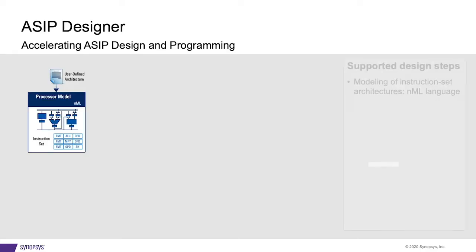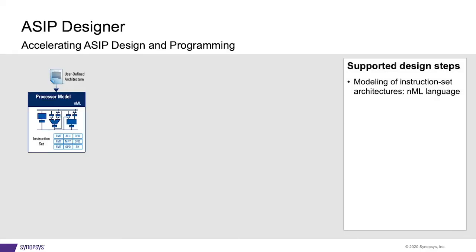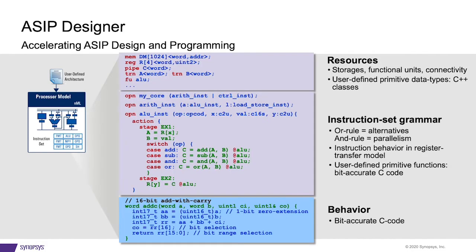Let me briefly explain the tool flow. It all starts with describing the processor in NML, a registered transfer language tuned for the specification of processors. It allows you to define the resources, the instruction set, and the behavior of your data paths and interfaces.